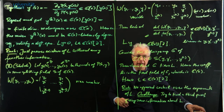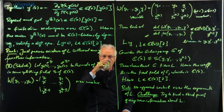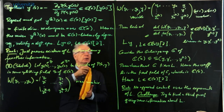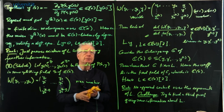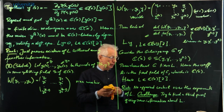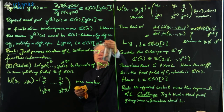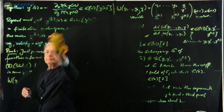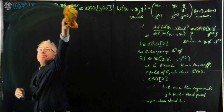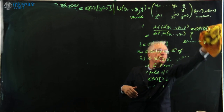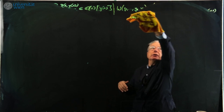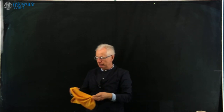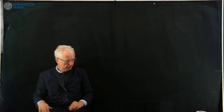That was my first proposition of today. Are there any questions or comments? We are a small group so we could have a chat. Now I will erase everything and go on to the second proposition I want to prove today. There are three pieces today; this was the first piece, showing that every algebraic function satisfies a differential equation with polynomial coefficients. Now I will prove a second property of algebraic functions, which is Eisenstein's theorem.